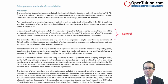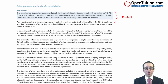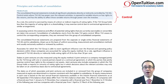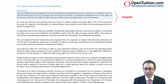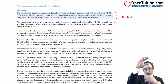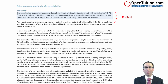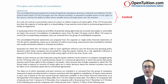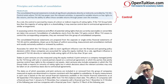It talks about the principles and methods of consolidation. First, it talks about control — the consolidated financial statements include all significant subsidiaries directly or indirectly controlled by TUI AG. AG is the German equivalent of a listed PLC, so TUI is a German parent company. Direct control means parent-subsidiary; indirect control means parent-sub-subsidiary.